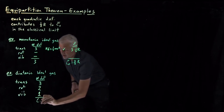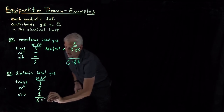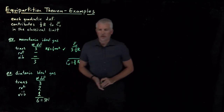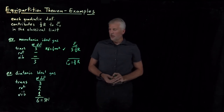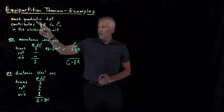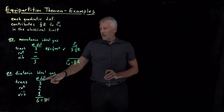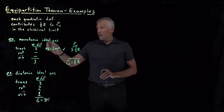The diatomic molecule has 3N, or six total degrees of freedom. Now we have to determine how many of those degrees of freedom are quadratic, so that we can apply the equipartition theorem.